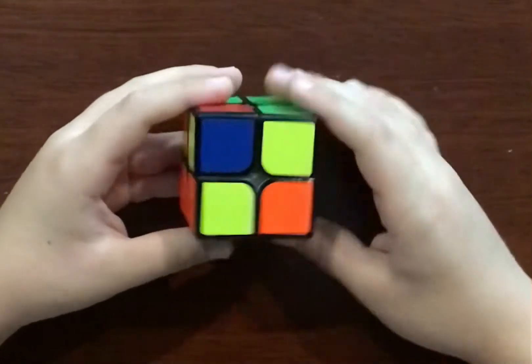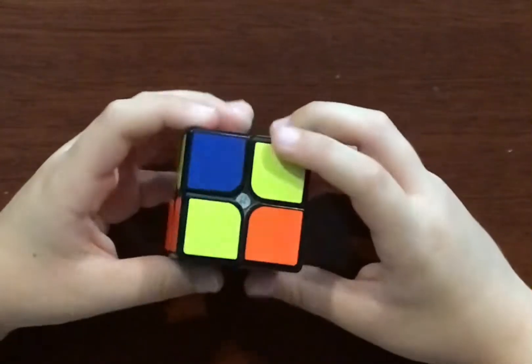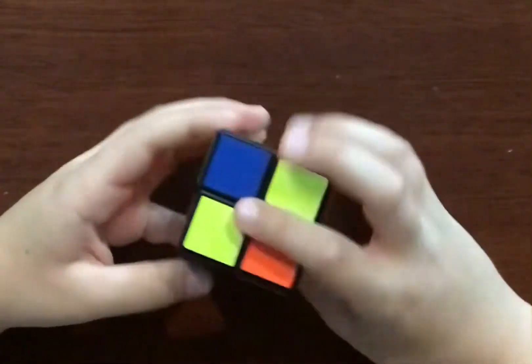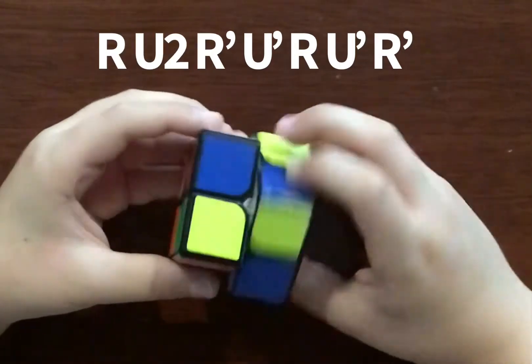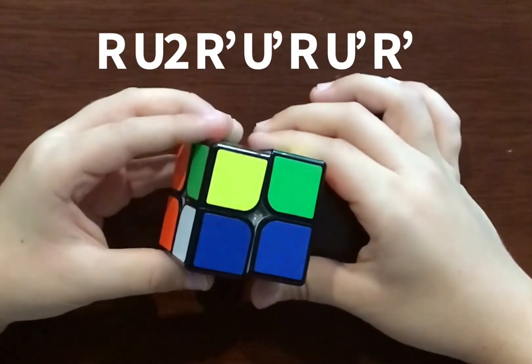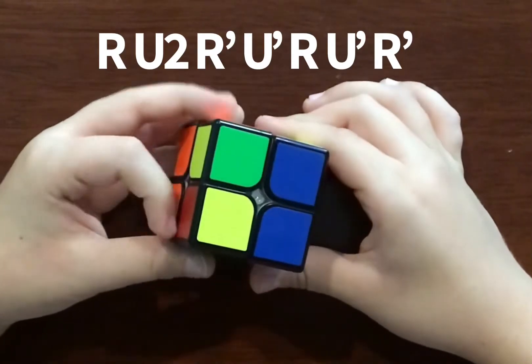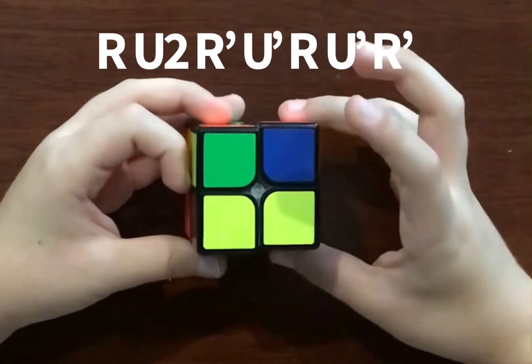The next step is solving the yellow face. So this is the first case, case where you get two. So you do R, U2, R, U prime, R prime, U prime, R prime.